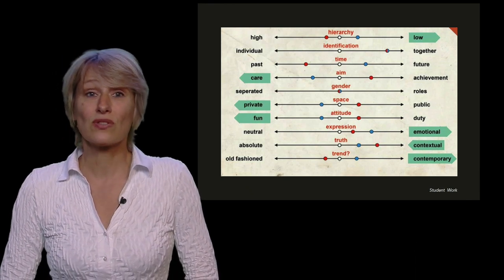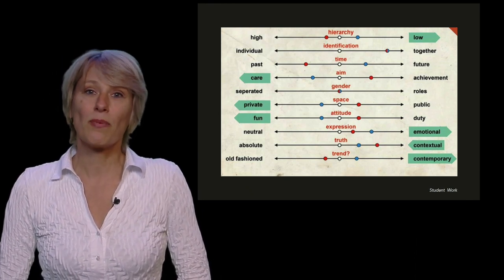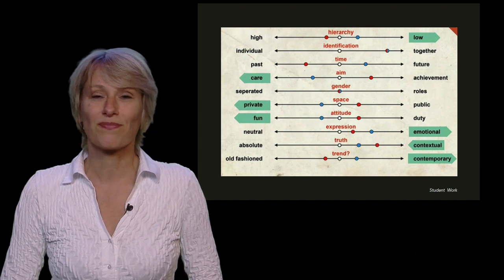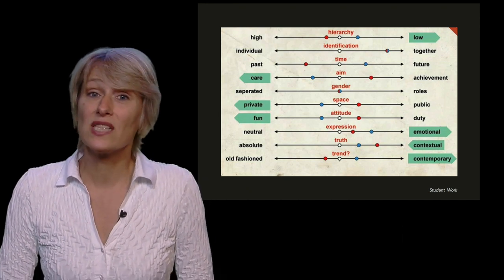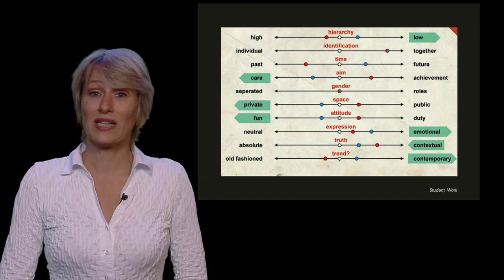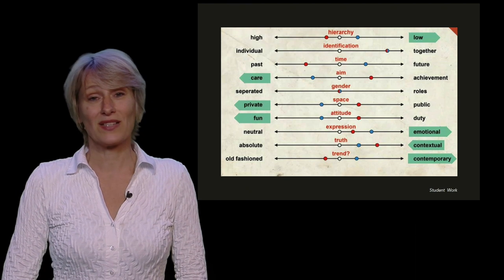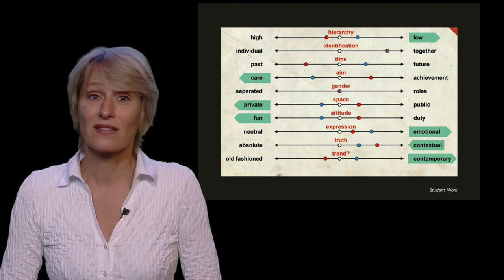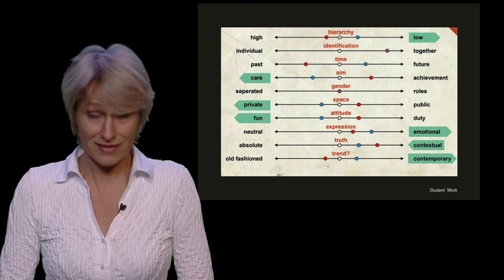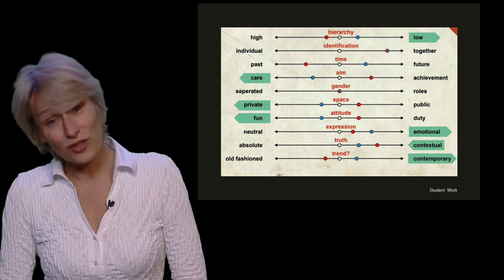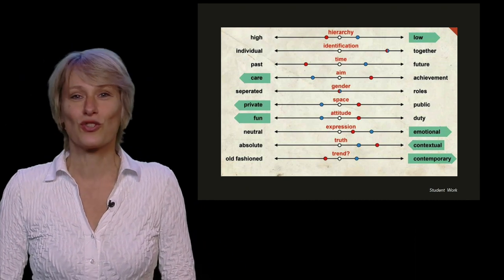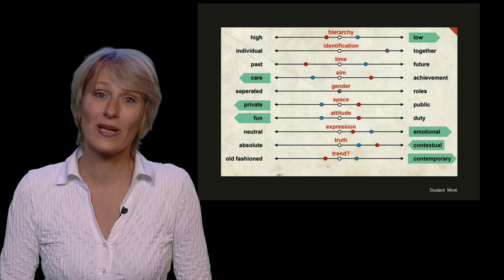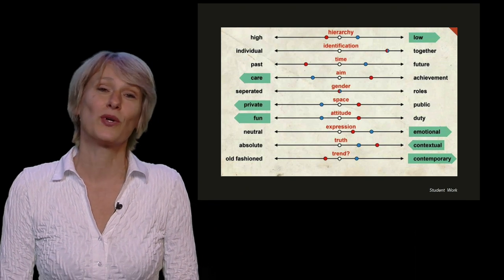It is important to be very specific about the imagined situation. Here you see how a design team used the list of dimensions to communicate the current value orientation, shown with red dots, and the desired value orientation, shown with blue dots, that they were aiming for when designing a ritual.